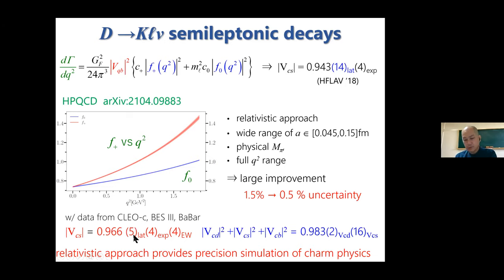By using this result we obtain Vcs as shown. Here lattice QCD is no longer the source of the dominant uncertainty. By using this we can confirm the unitarity condition for the second row with one to two percent accuracy. These two examples demonstrate that the relativistic approach can provide precise simulation of charm physics.